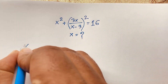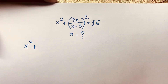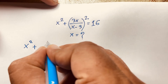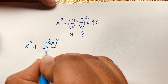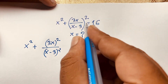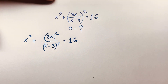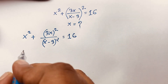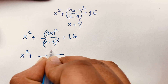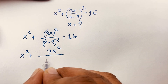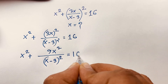It will be x² plus 3x over (x - 3), so I can split this expression. It will be (3x)² over (x - 3)², according to exponential law, equal to 16. Then here is x² and it will be 9x² and we find (x - 3)² = 16.